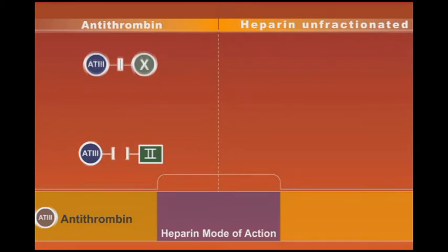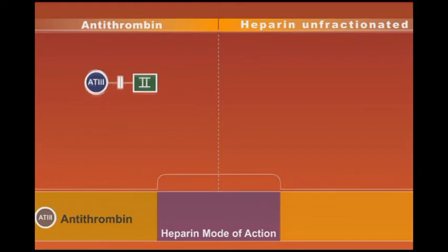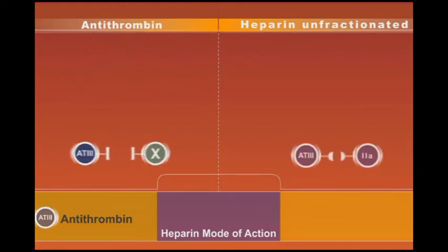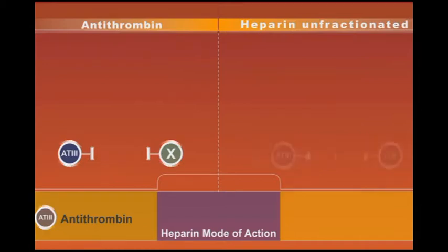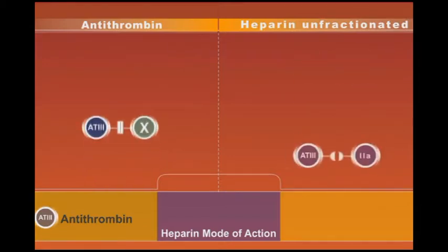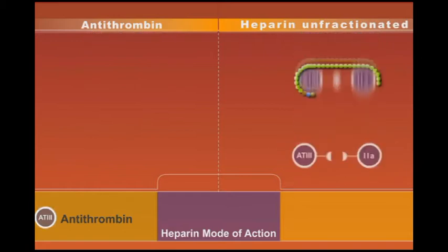Naturally, antithrombin 3 protein molecules bind to and inactivate coagulation factors 2 and 10; however, this process is naturally slow. Heparin, also known as unfractionated heparin, is a sulfated polysaccharide with a molecular weight of 15,000 to 20,000. Heparin binds to antithrombin 3 and makes it a thousand-fold faster, resulting in rapid inactivation of coagulation factors 2 and 10.